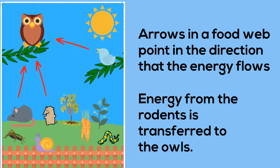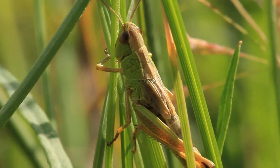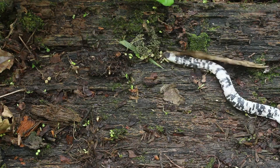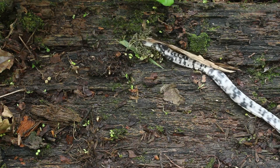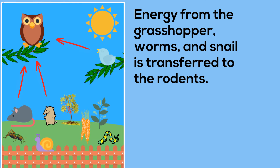The owl is considered the tertiary consumer because it is the topmost level and feeds on other carnivores. Now let's see what the rodents eat. Rodents eat a large variety of insects including grasshoppers, along with worms and snails. So the energy of these animals is transferred to the rodents, so the arrows point towards the rodents.